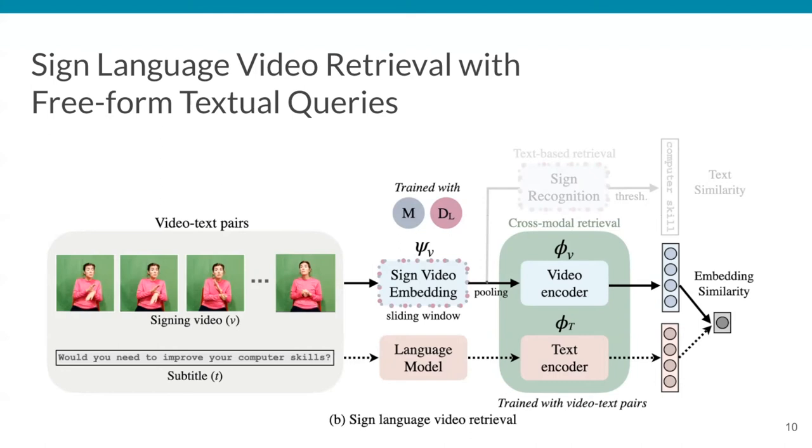In addition to the cross-modal retrieval embeddings, the sign recognition model used to train the sign video embeddings can be used to obtain a sequence of signs if applied in a sliding window manner in the long sign video. The output list of predicted sign categories gives us a set of candidate words, which we compute the intersection or union to check the overlap with the query text.